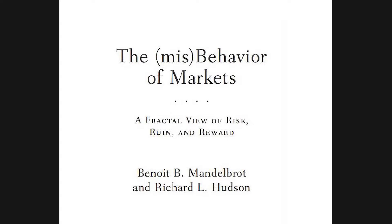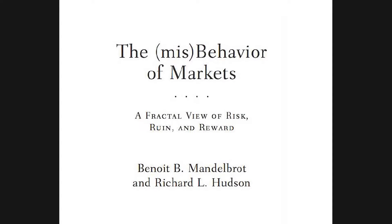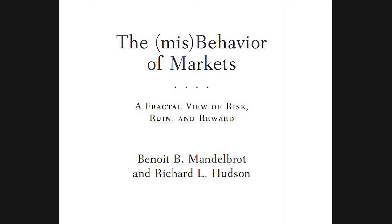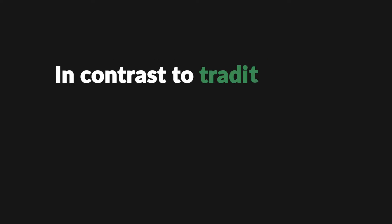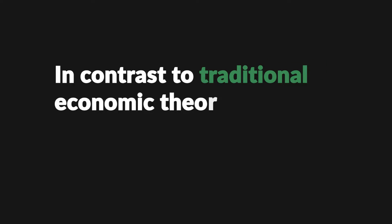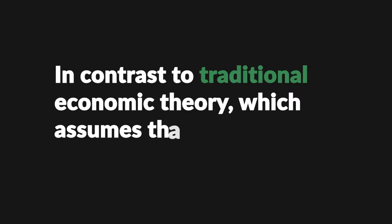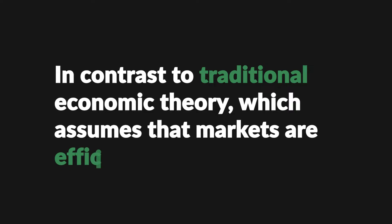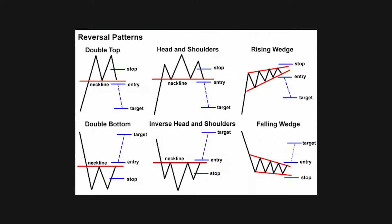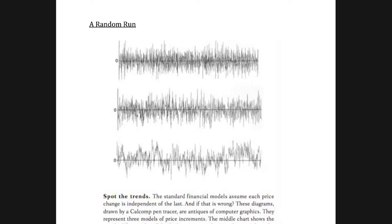This book offers a unique perspective on the nature of markets and how they operate. In contrast to traditional economic theory, which assumes that markets are efficient and follow predictable patterns, Mandelbrot argues that markets are inherently unpredictable and subject to wild fluctuations.